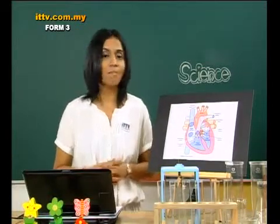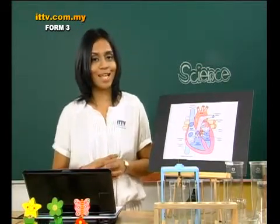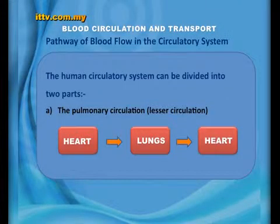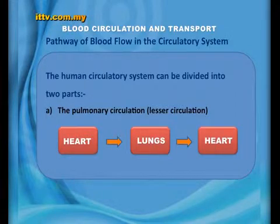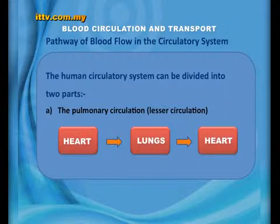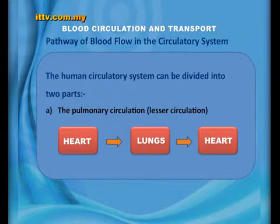Let's have a look at the pulmonary circulation, which is the lesser circulation. The pulmonary circulation starts with the heart. From the heart, the blood flows to the lungs. From the lungs, blood then flows back to the heart. Remember, students: heart, lungs, and back to the heart — this is the pulmonary circulation or the lesser circulation.